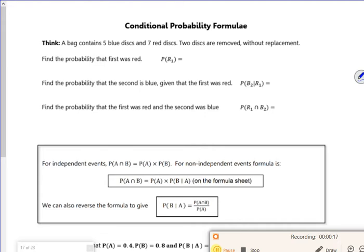Let's have a look at this question. A bag contains five blue discs and seven red discs. Two discs are removed without replacement. Find the probability that the first one is red. So the first one is red would be seven out of twelve.